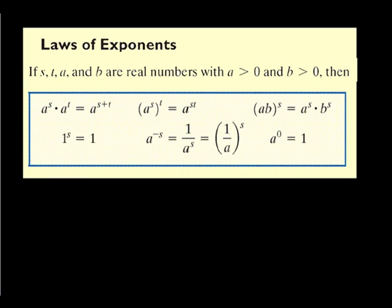Before we start solving exponential equations, it's really important to remember the laws for exponents. When you multiply, you add exponents. When you have a power to a power, you multiply. (ab)^s = a^s · b^s. A negative exponent means 1 over. Also, when dividing, you subtract exponents. If you don't remember these, definitely put them in your notes and on the cheat sheet for the chapter 5 test.